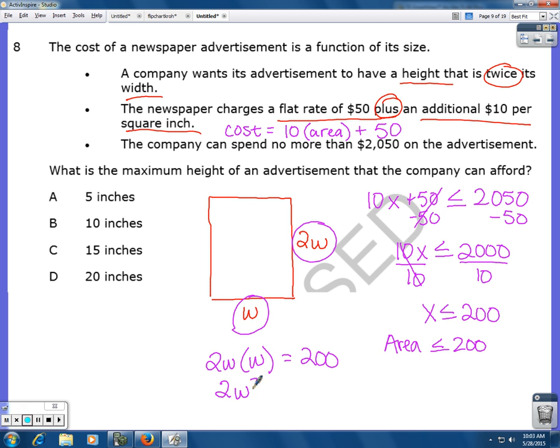So that's 2W squared equals 200. So now I'm going to solve for W, which is going to give me the width.